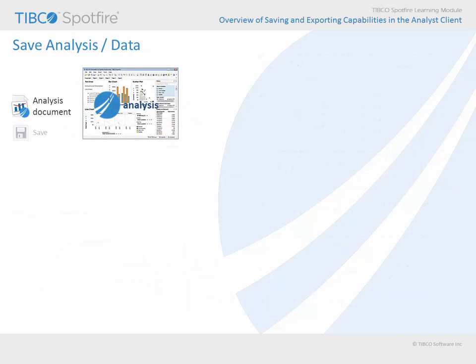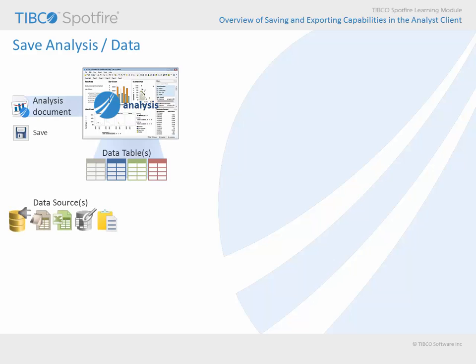As you prepare to save your analysis, it's time to think again about the nature of the analysis document relative to the underlying data table or data tables. Be certain to consider them as separate but integrated items. You will need to understand how each of the data tables in your analysis document is configured relative to the original data source for that data table. Keep in mind that if you used insert columns or insert rows to add data to an existing data table, there may be more than one data source supporting a single data table.